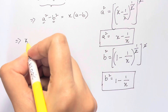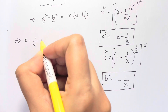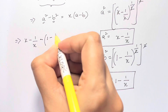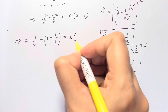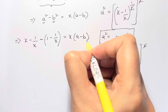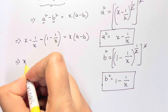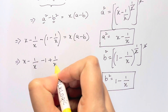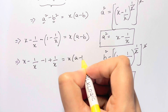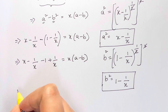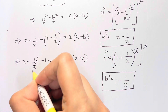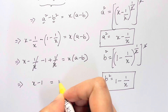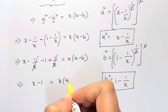Substituting, we get: (x minus 1 over x) minus (1 minus 1 over x) equals x times (a minus b). Opening up the brackets: x minus 1 over x minus 1 plus 1 over x equals x times (a minus b). The 1 over x terms cancel, and we are left with x minus 1 equals x times (a minus b).